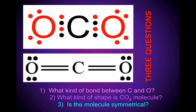Let's look at carbon dioxide. What kind of bond exists between carbon and oxygen? If you subtract the electronegativities, you will find that the carbon-oxygen bond is polar covalent, with the dipole directed towards the oxygen atom. But carbon dioxide has a linear shape. The molecule is symmetrical, with the dipoles facing in opposite directions, thereby canceling each other out. Because carbon dioxide is a linear molecule, even though the bonding is polar covalent, the molecule is nonpolar.